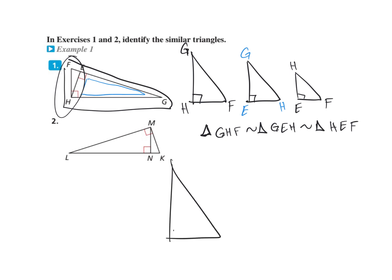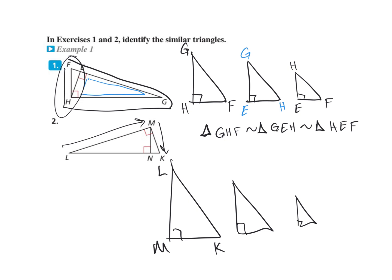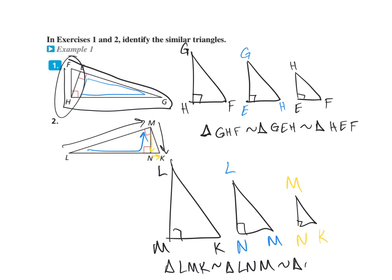We do the same thing down here. Draw three triangles. Here I'm going to go L to M to K — L is the top, M is the 90 degrees, and K is what's left. Then the bigger of the two smaller triangles: L to N to M, so L to the 90-degree angle N, and then to M. I always put the 90 degrees in the middle — that makes it easier. And then the small one: M to N to K. Then you write your triangle similarity: triangle LMK is similar to triangle LNM, which is similar to triangle MNK.